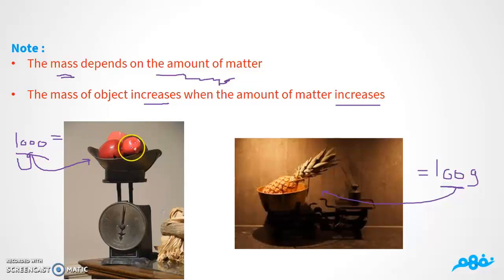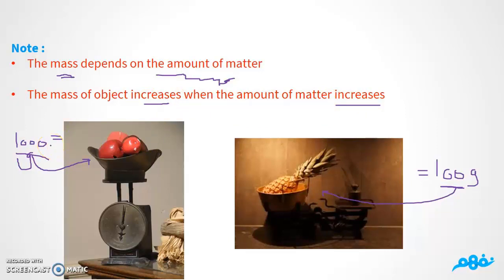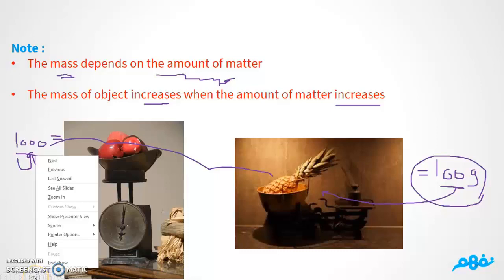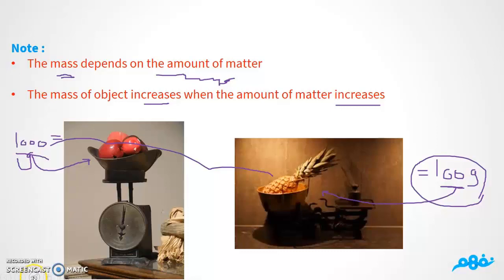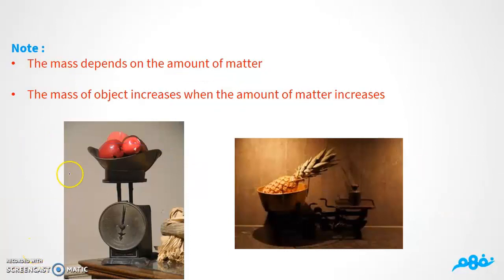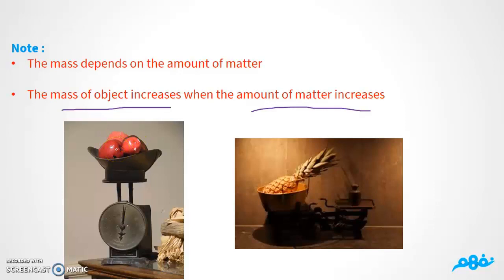So, the mass of the object increases when the amount of matter increases, and vice versa — when the amount decreases, the mass decreases too. If the number of apples increases, the mass increases; if the number of apples decreases, the mass decreases.